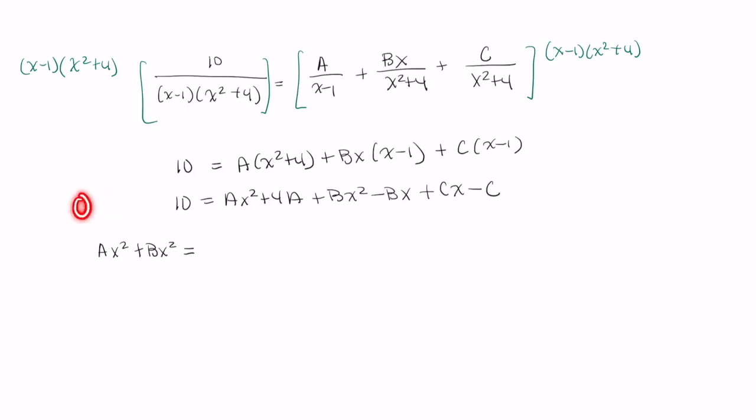I have 0. In fact, I could write this as 0x squared plus 10. So that tells me that ax squared plus bx squared equals 0. That only holds if A plus B is equal to 0. Now,